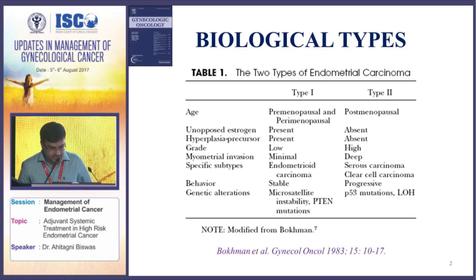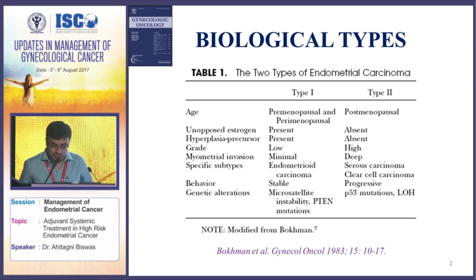It's imperative to understand the biological differences between type 1 and type 2 endometrial cancer. Type 1 cancers are estrogen-dependent, in contradistinction to type 2 cancers which are estrogen-independent. The prototype for type 1 cancer is endometrioid adenocarcinoma, and the prototype for type 2 cancers are serous and clear cell carcinomas.